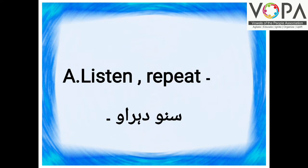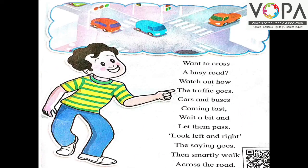Point A. Listen, Repeat. Suno Dohrao. Once to cross a busy road, watch out how the traffic goes. Cars and buses coming fast, wait a bit and let them pass. Look left and right, the saying goes. Then, smartly walk across the road.